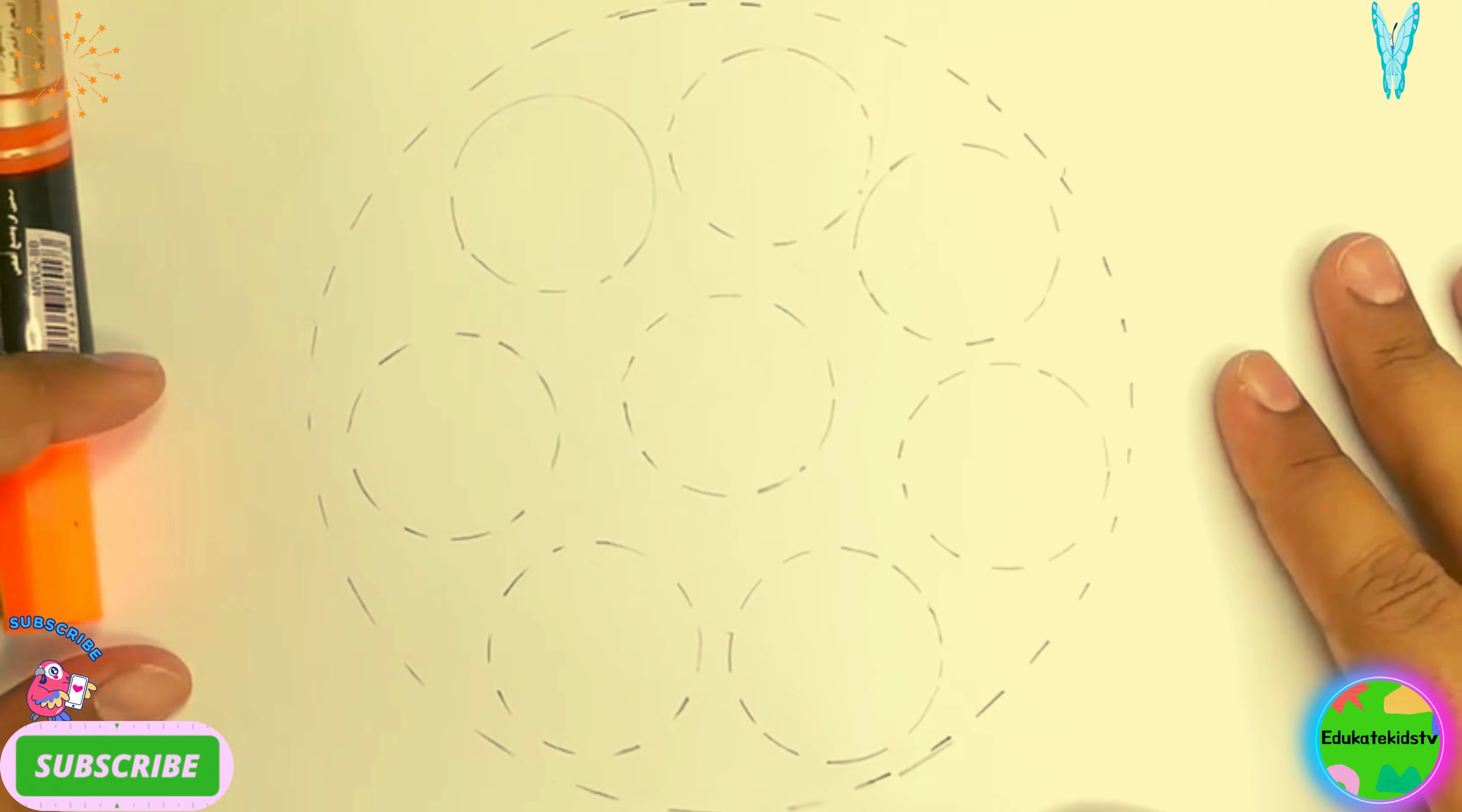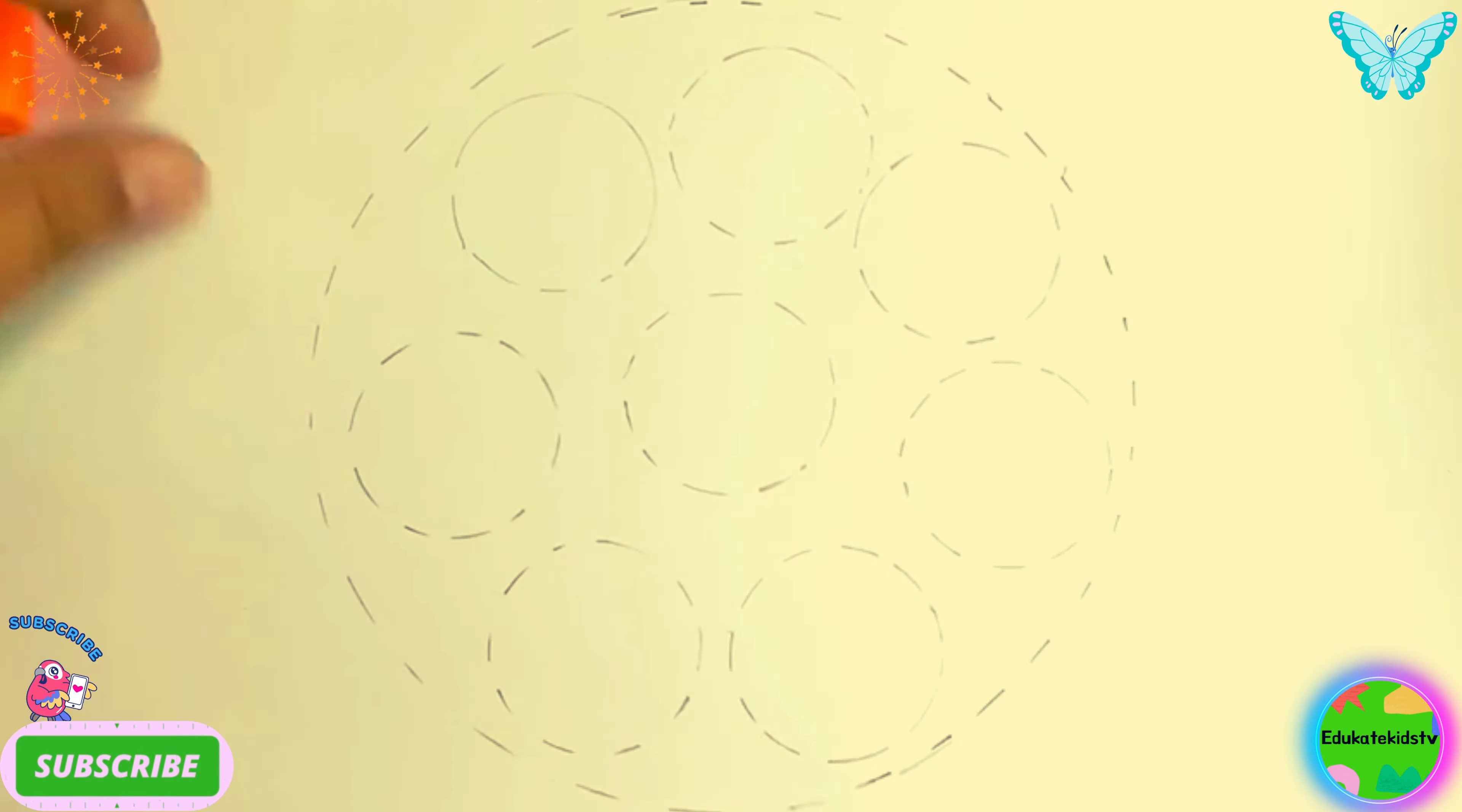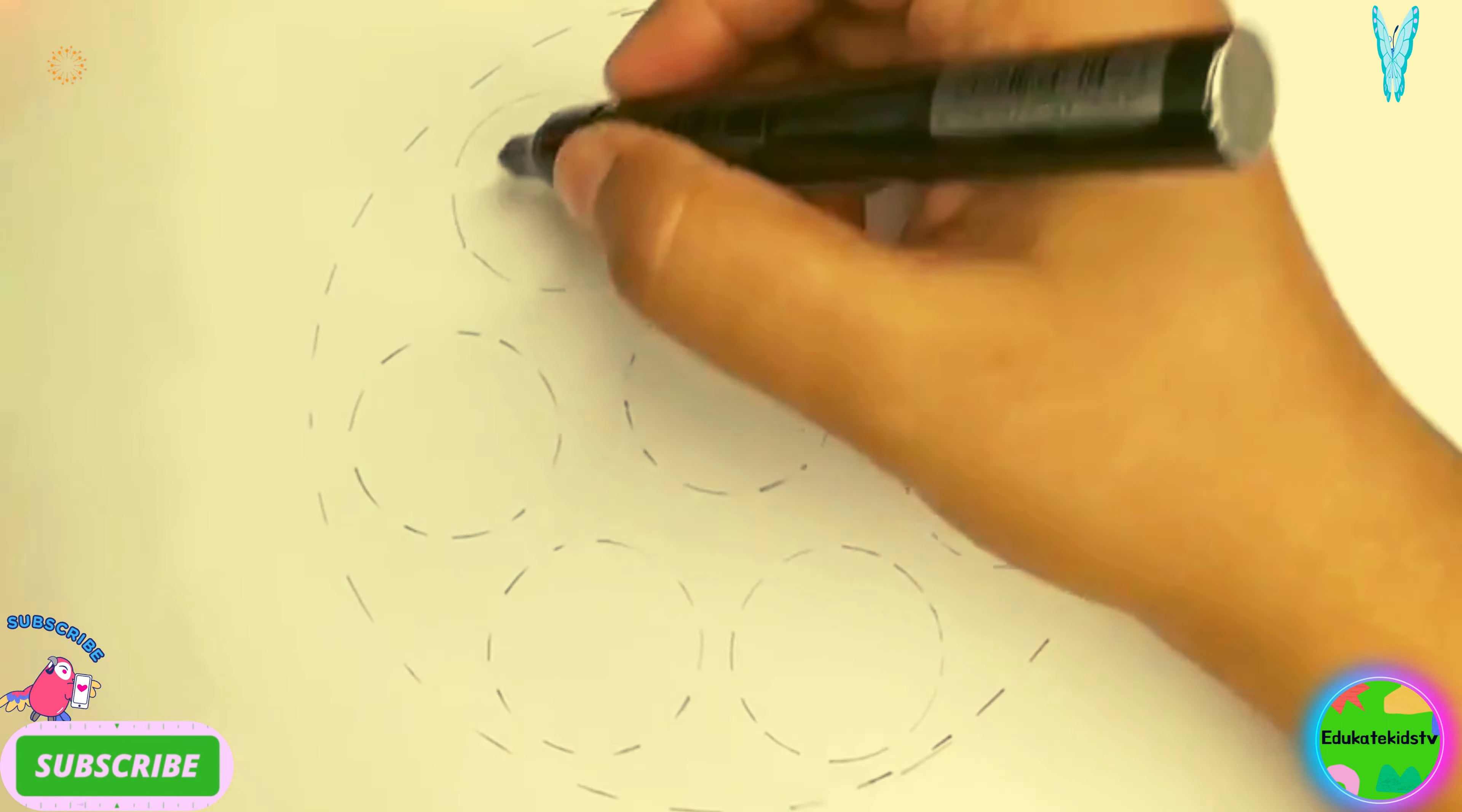Now we are having a circle, a bigger one, and then small circles inside it. I'm going to use my black marker to draw these circles. So let's draw them, hooray!